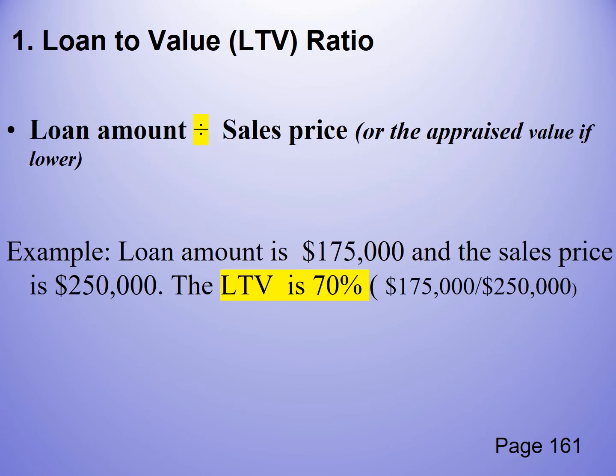The loan-to-value ratio is simply the amount of the loan divided by the sales price. So if the loan amount is $175,000 and the sale price is $250,000, we have an LTV of 70%. The loan-to-value ratio is a percentage of the loan amount to the sale price.